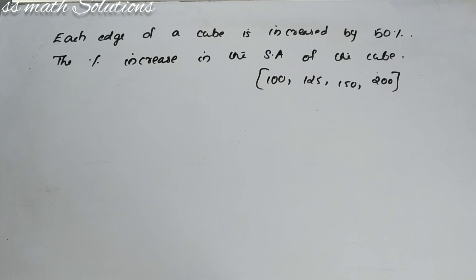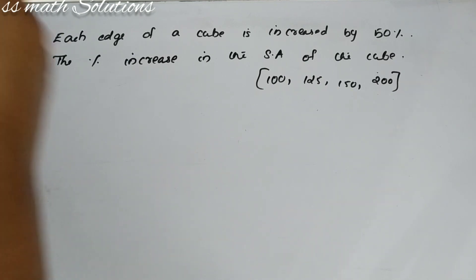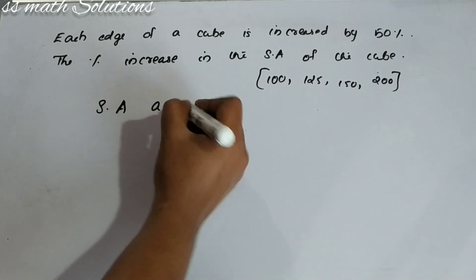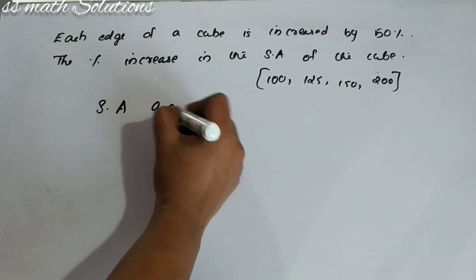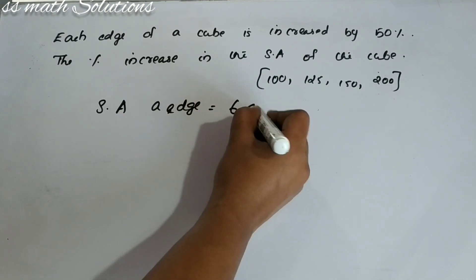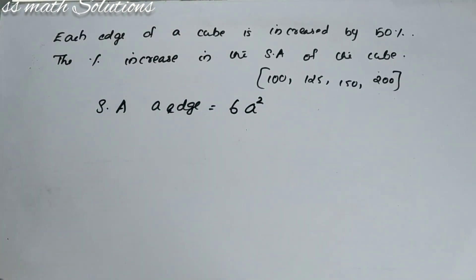Here is our question. Each edge of a cube is increased by 50%. Find the percentage increase in the surface area of the cube. We take A as the actual edge. The surface area of a cube with edge A is 6A².